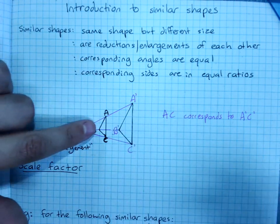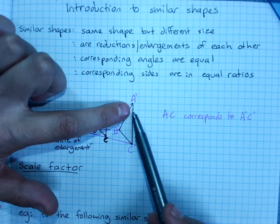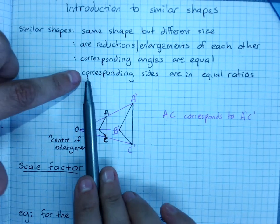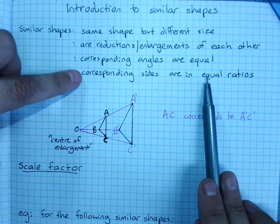Corresponding angles are equal, says angle A is equal to angle A prime. But corresponding sides are in equal ratios.